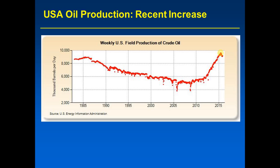Then you see the start of a decline that has continued. By April of 2016, U.S. oil production had dipped below 9 million barrels per day. By July of this year, U.S. oil production had dipped below 8.5 million barrels per day, and perhaps in just a couple of months, U.S. oil production will probably have dropped back below 8 million barrels per day.